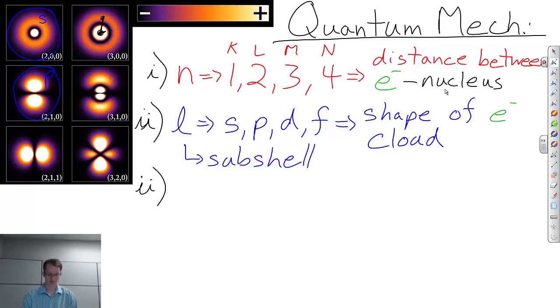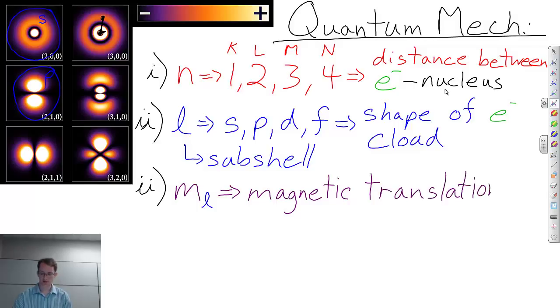Another number we need to take into consideration is m sub l. So why m sub l? m stands for magnetic, but it's the magnetism due to the subshell, due to that translation of the electron inside that subshell. So this is magnetism created by the translation of the electron inside that subshell.